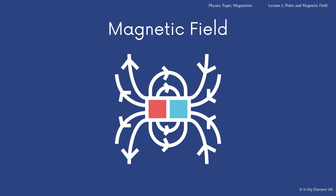Each magnet is surrounded by a magnetic field. Once you're within that magnetic field, you begin to feel those forces. We can represent the magnetic field by drawing magnetic field lines. On this diagram, we've got the north pole on the left-hand side, represented by the red. On the right-hand side we've got the south pole, and the white lines are the magnetic field lines. You'll notice they've got arrows on them — the magnetic field lines flow from the north pole to the south pole.